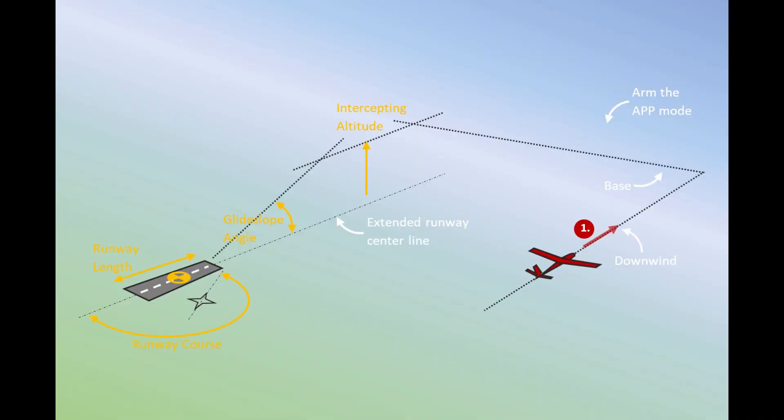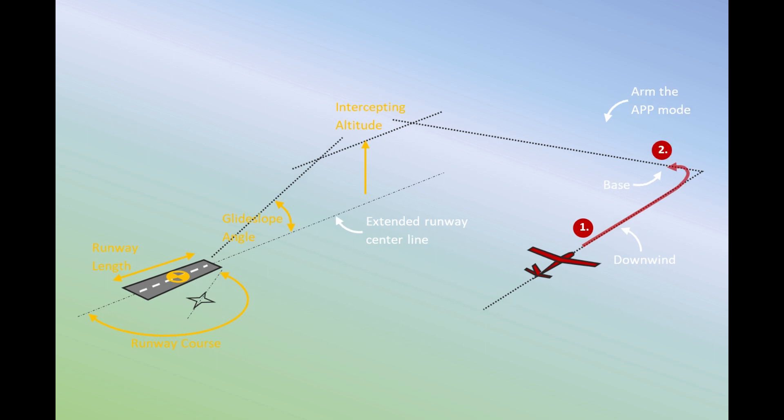On this diagram, all steps of an ILS approach are shown. The Flight Zoomer autopilot modes are implemented using the guided ArduCopter mode. Using the Flight Zoomer autopilot, the downwind is flown with the track over ground mode and the altitude hold mode. By dialing in a new target course, the turn into base is initiated.